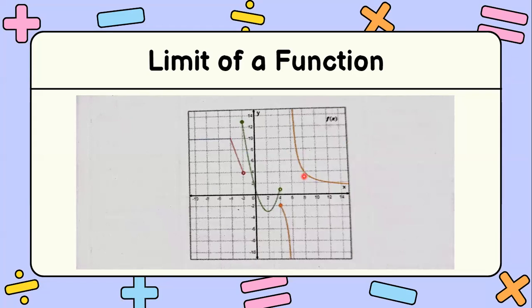The first function — the red graph — includes negative infinity up to negative 2, where negative 2 is not included in the function. The given dot is hollow or not shaded, meaning negative 2 does not exist or is not included in the function.